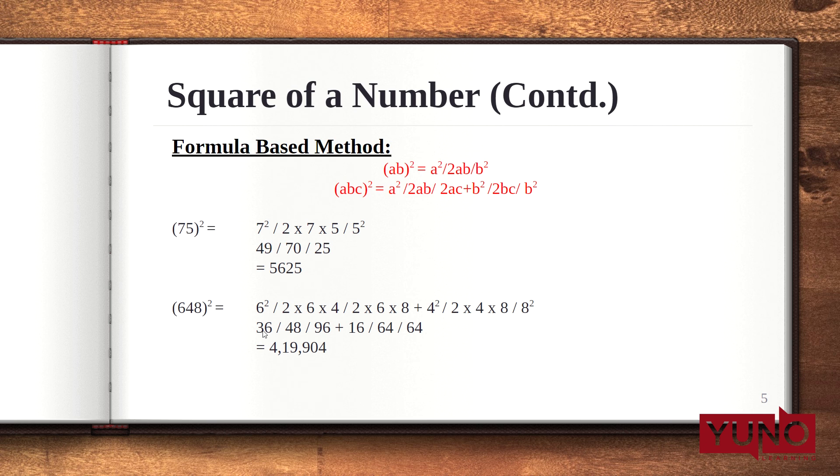Now, here 36, 48, 96 plus 16, 64 and 64. Now, again, when I balance these numbers, I get an answer of 4,19,904 which is the square of 648.